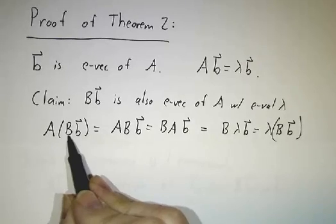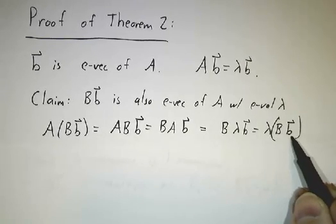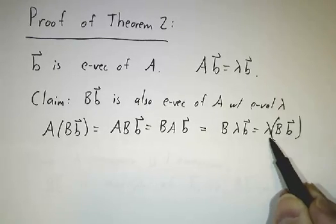So A times Bb is λ times Bb. In other words, Bb is an eigenvector of A with eigenvalue λ.